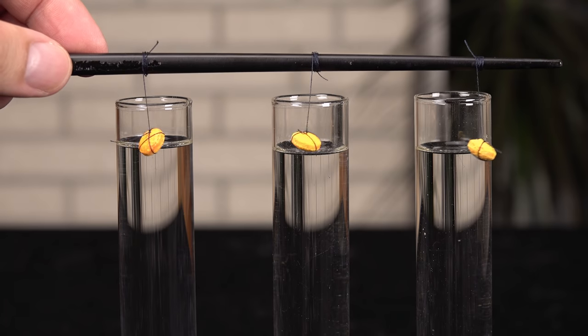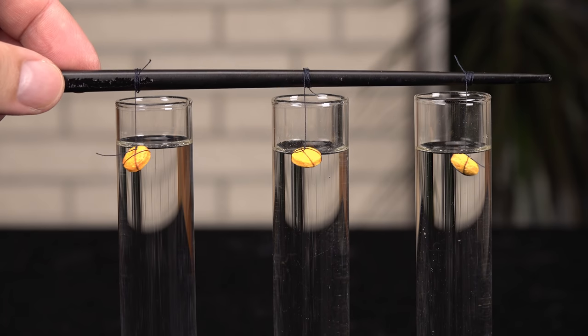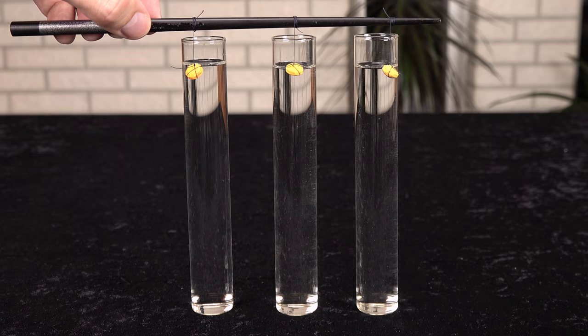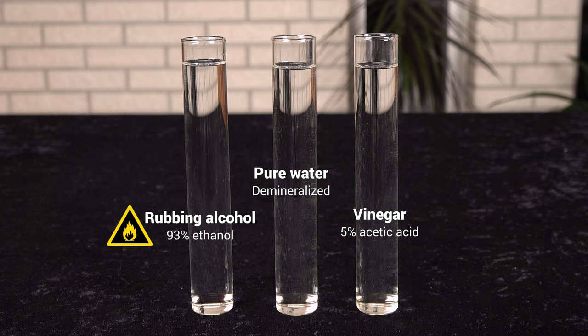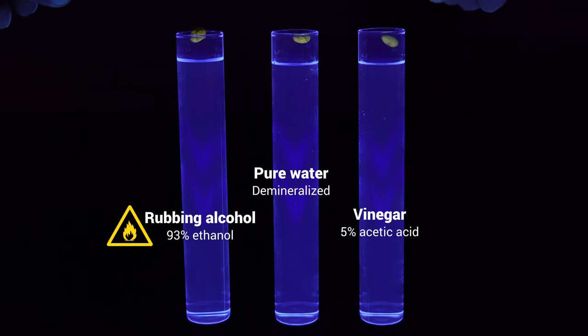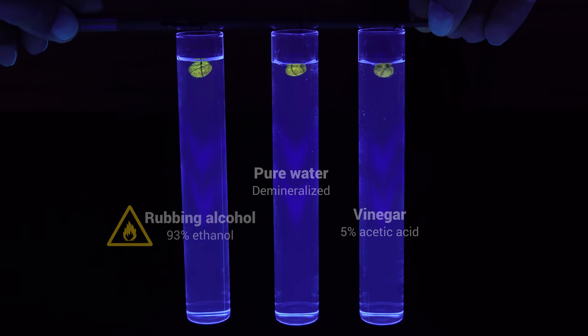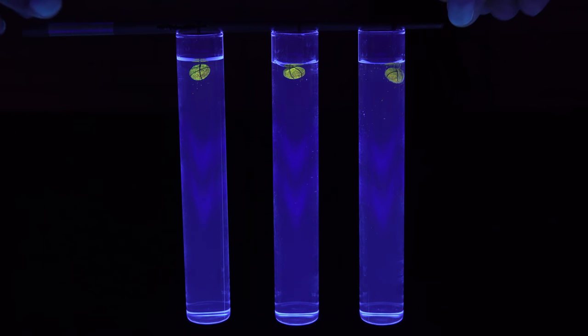I haven't tested the fluorescence of vitamin pills before, so to add an extra layer I'll use three different solvents: ethanol, water, and vinegar. Can you guess which one works the best? I will test them simultaneously under blacklight. Ready? Here we go.